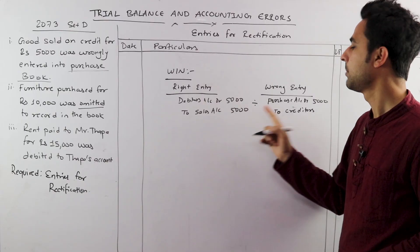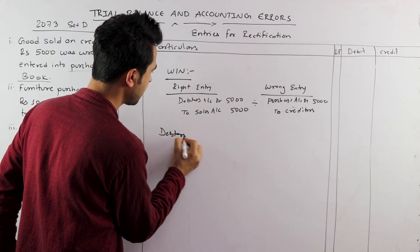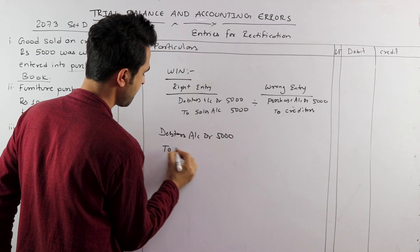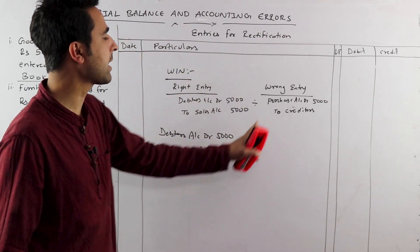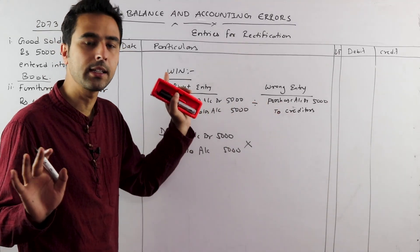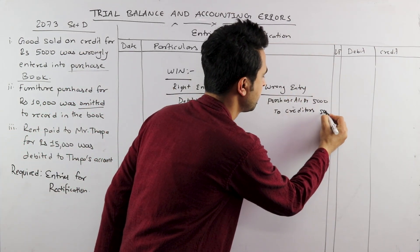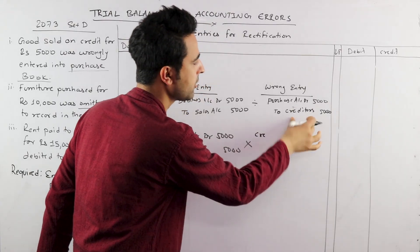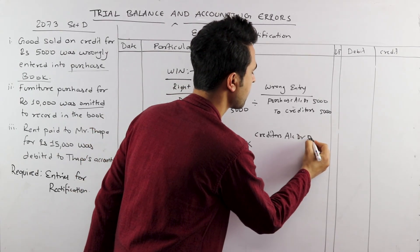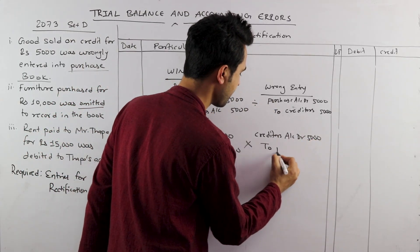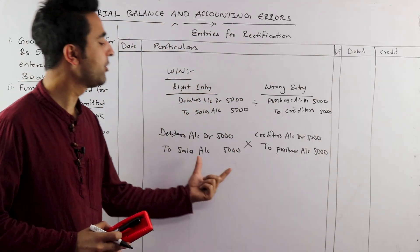Two entries: right entry and wrong entry. Account debit 5,000 to Sales 5,000. Creditors account debit to Purchase account 5,000 — this is the wrong entry. Debtors account debit 5,000.